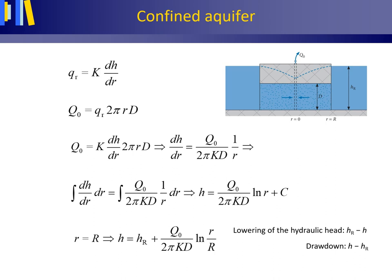This slide summarizes section M6 at the end of the book, showing the derivation of the Dupuis equation. Starting with the Darcy equation and the continuity equation, we insert Darcy into continuity, rewrite it, and integrate to obtain a general solution. Then we insert the boundary condition r equals R to find the constant C, yielding the final Dupuis equation.